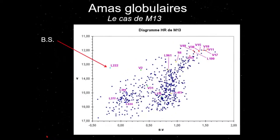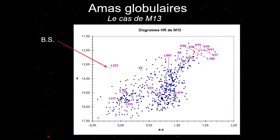Ces étoiles bleues, hyper chaudes, de faible durée de vie, sont apparues largement après la formation de l'amas — alors qu'il n'y a plus de matière pour en créer de nouvelles. On les appelle les traînards bleus — « blue stragglers ». Ils ont été trouvés par Olin Sandage dans M3 dans les années 1970, et dans l'amas Terzan 5 dans le bulbe galactique vers le Sagittaire. On les voit en rayon X : ils sont très lumineux et très chauds. Comment sont-ils apparus ? Il s'est passé des choses bizarres entre les vieilles étoiles.